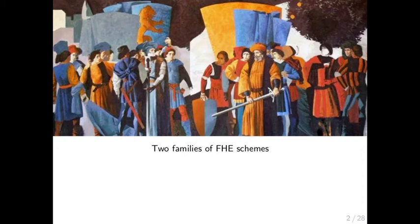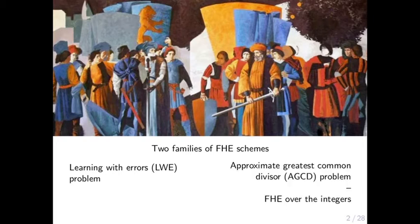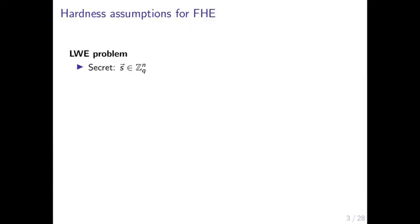As you may know, there are basically two main families of fully homomorphic encryption schemes: schemes based on the Learning With Errors problem, which we call LWE, and schemes based on the Approximate Greatest Common Divisor problem, which we call AGCD. The schemes based on the AGCD problem are the ones that we call FHE over the integers.